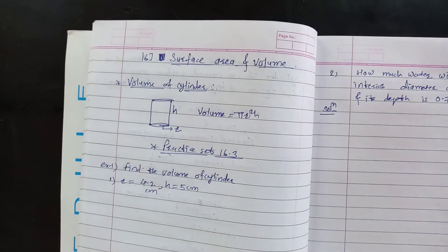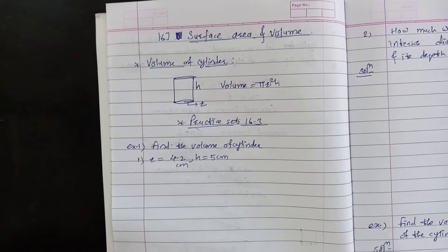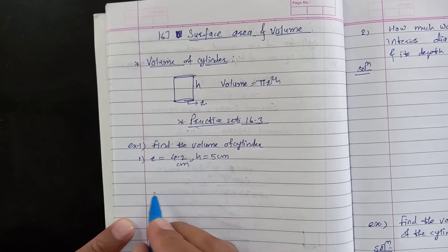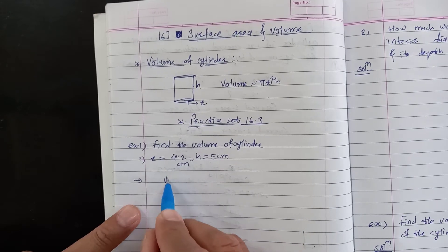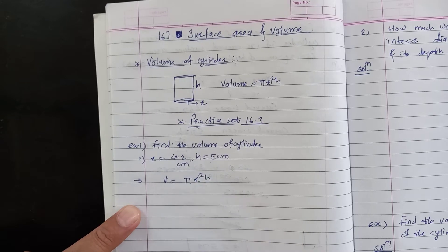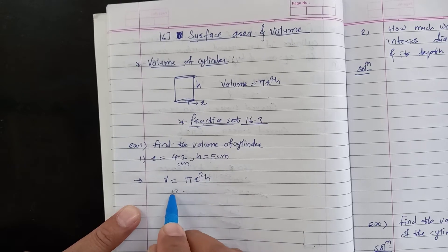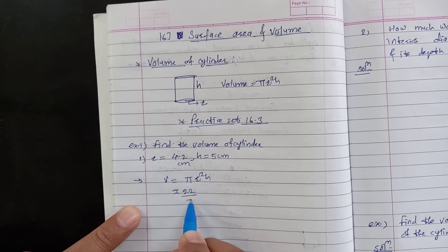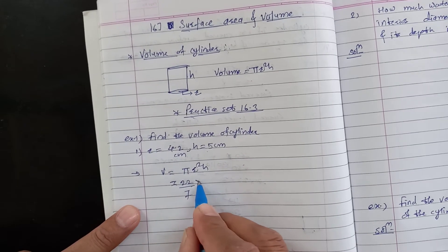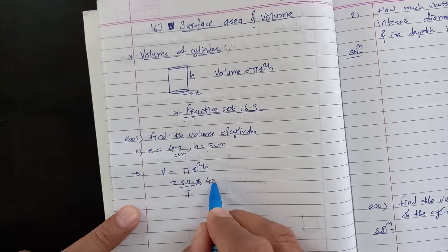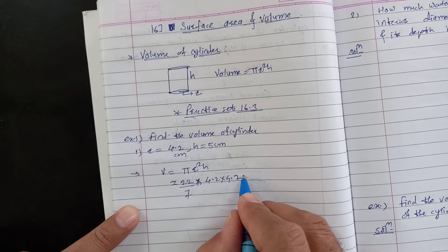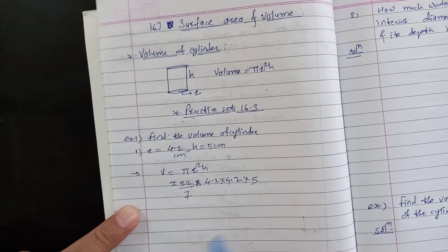First example of Practice Set 16.3: find the volume of a cylinder where radius is 4.2 cm and height is 5 cm. The formula for volume is πr²h. Taking π = 22/7: volume = (22/7) × 4.2 × 4.2 × 5.